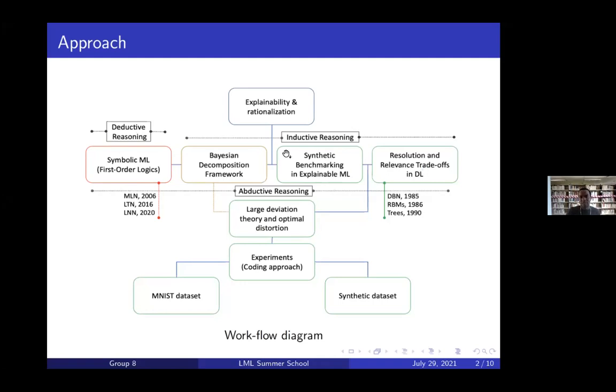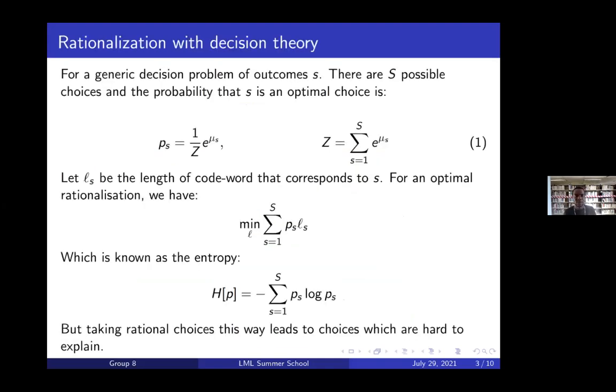Since we've taken inductive reasoning, we considered DBNs under resolution and relevance trade-offs, and a subset of them which is RBMs. The patient decomposition framework can be linked to large deviation theory, which builds directly from the resolution and relevance paper. From large deviation and optimal distortion, we did experiments: the MNIST dataset and synthetic dataset. In this presentation, we'll only focus on results from the MNIST dataset.